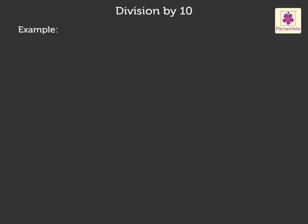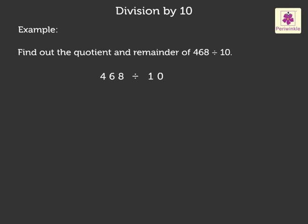Now, let us solve one more example without actual division. Find out the quotient and remainder of four hundred sixty-eight divided by ten. We already know that the digit in the one's place of the dividend forms the remainder. Thus, here eight is the remainder. Now, the remaining digits form the quotient. Thus, here forty-six is the quotient.